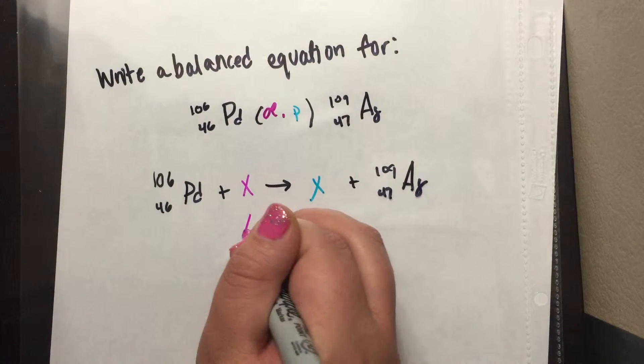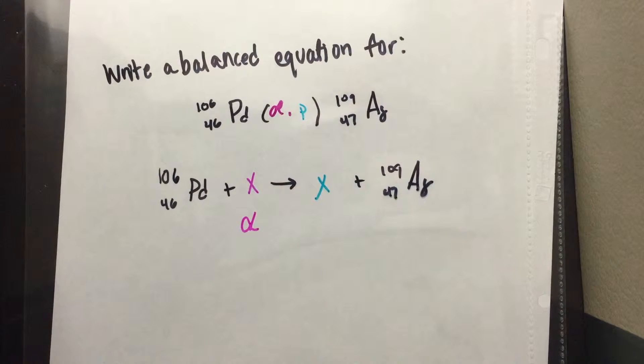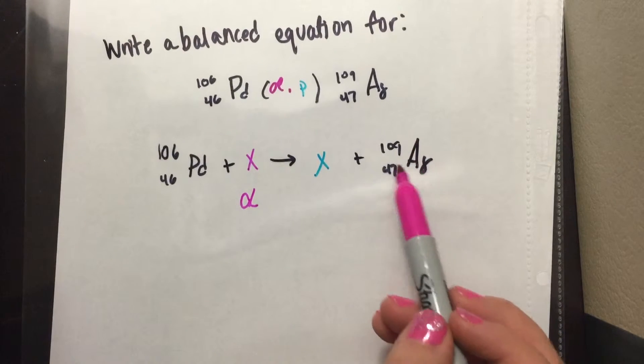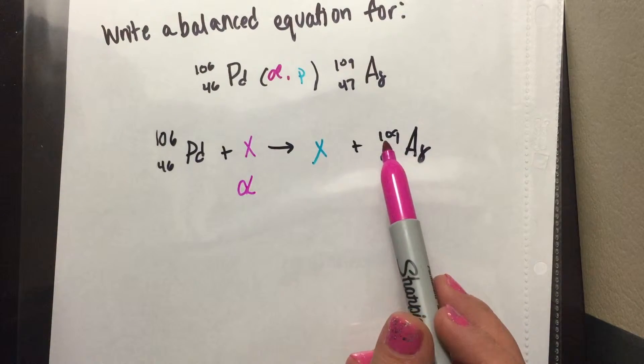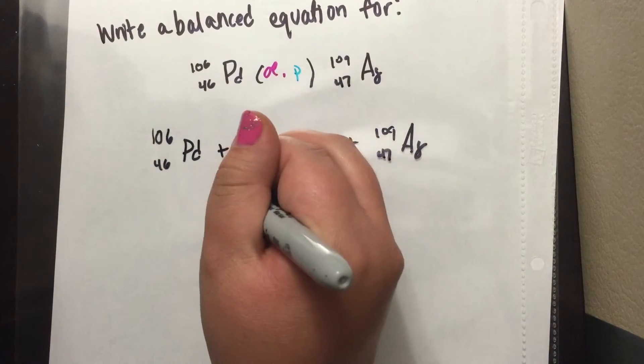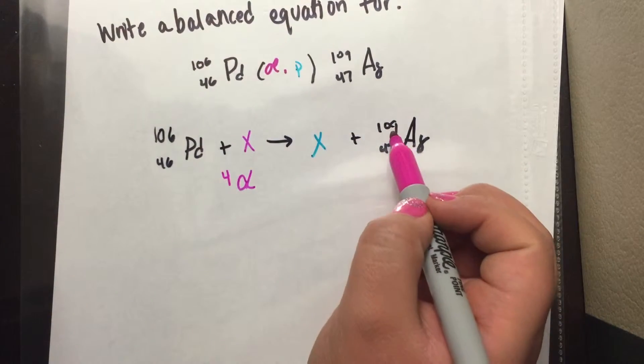So if we put alpha to be 4 and 2 because we have 109 over here and we have 47 over here. So we would put 4 and 2.